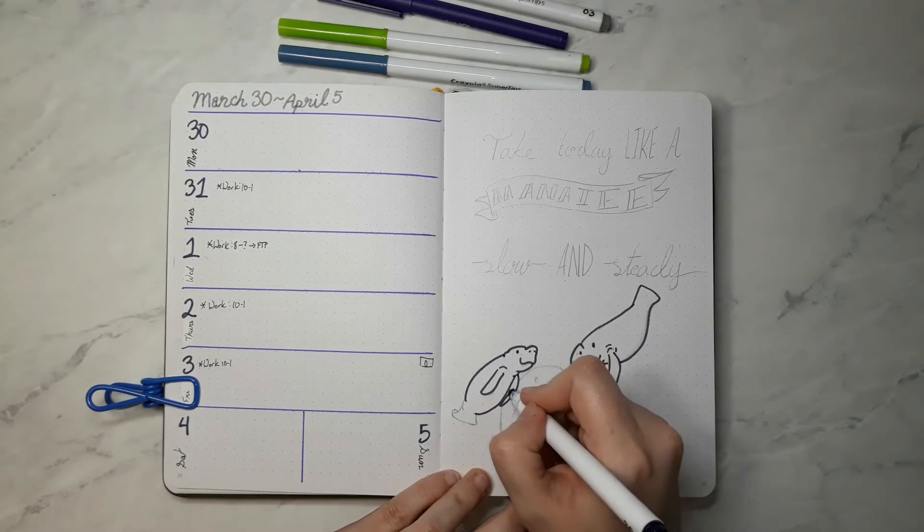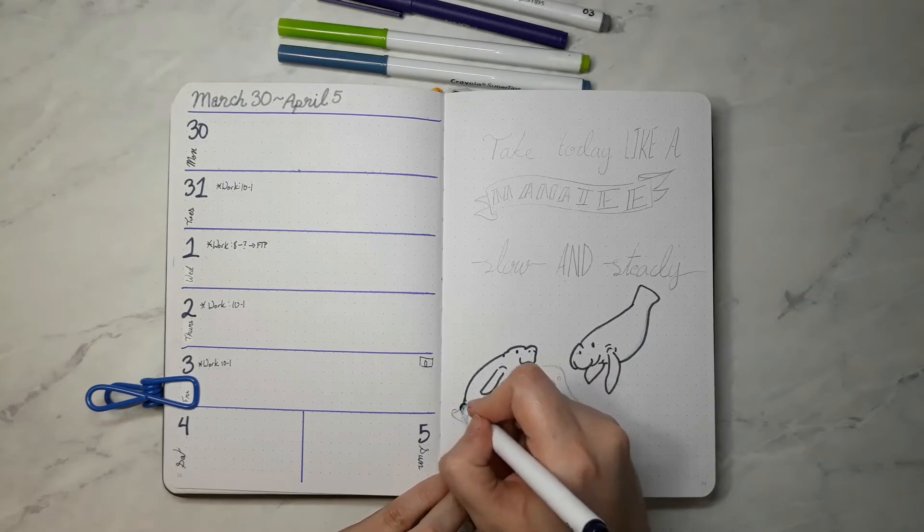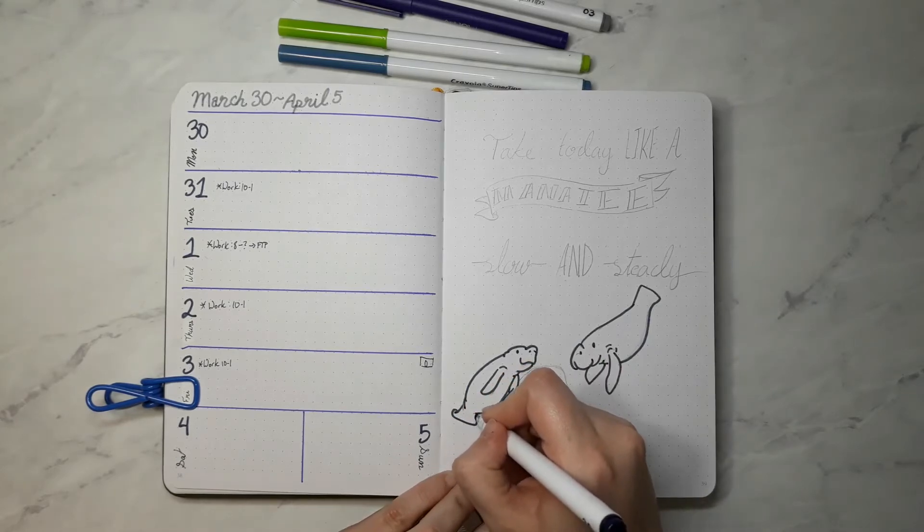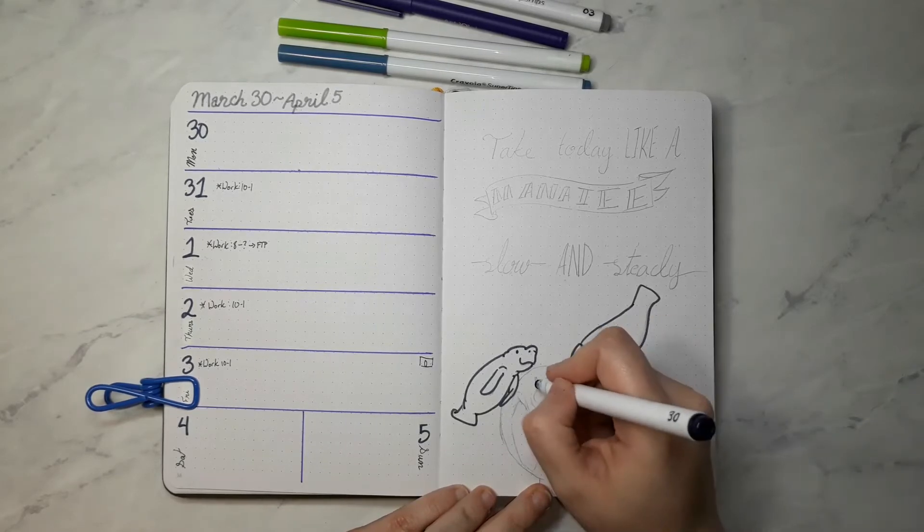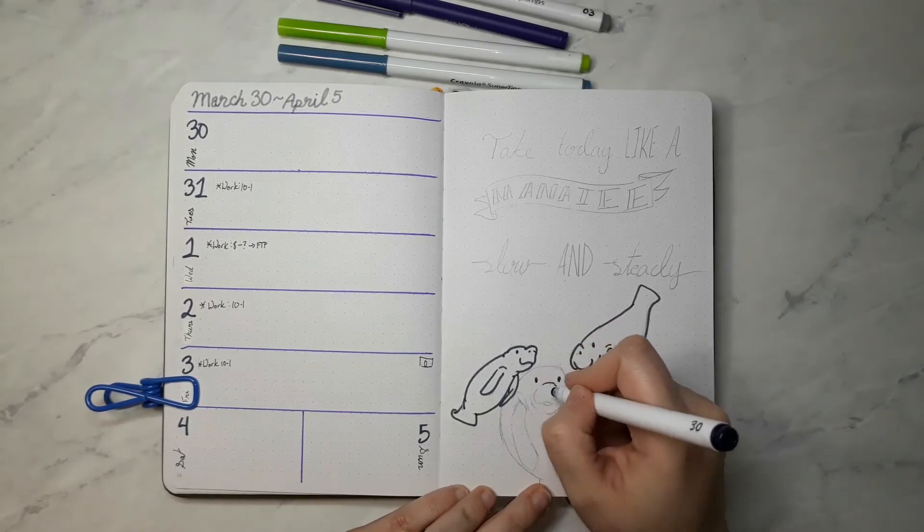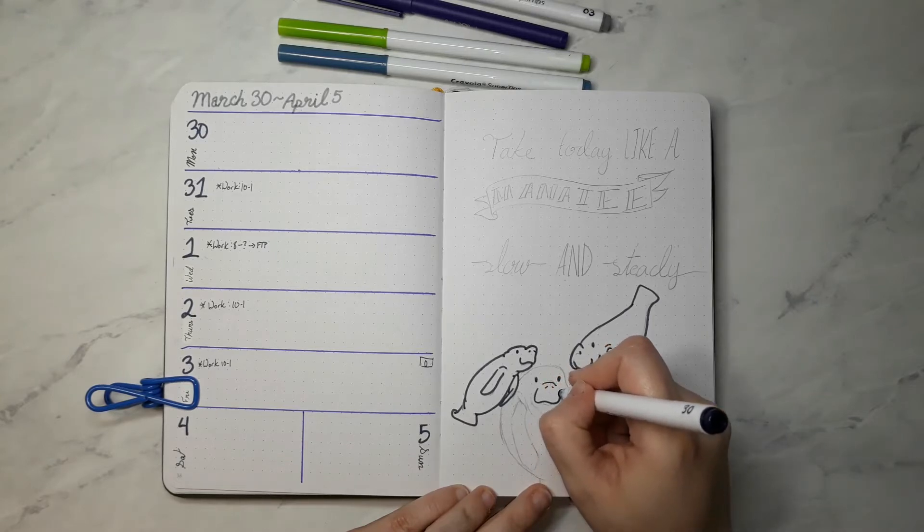I drew them out and I liked it, but I didn't like where they were placed. I didn't want to erase them, so I added another baby manatee just because baby manatees. Then I added a quote on the top of the page.